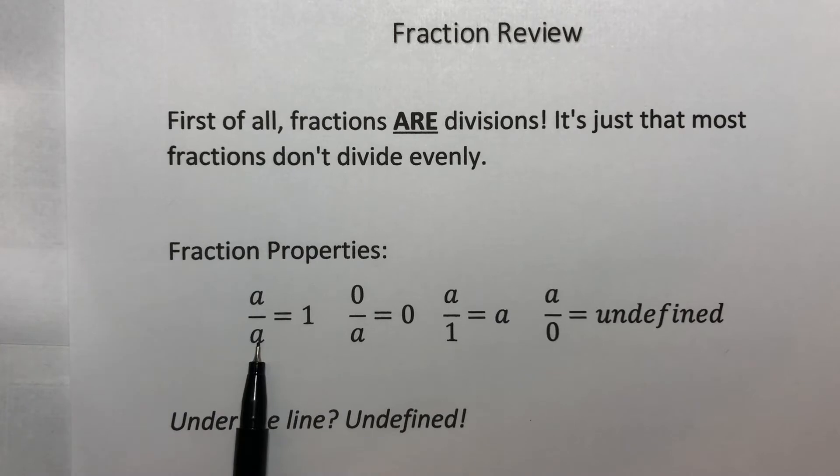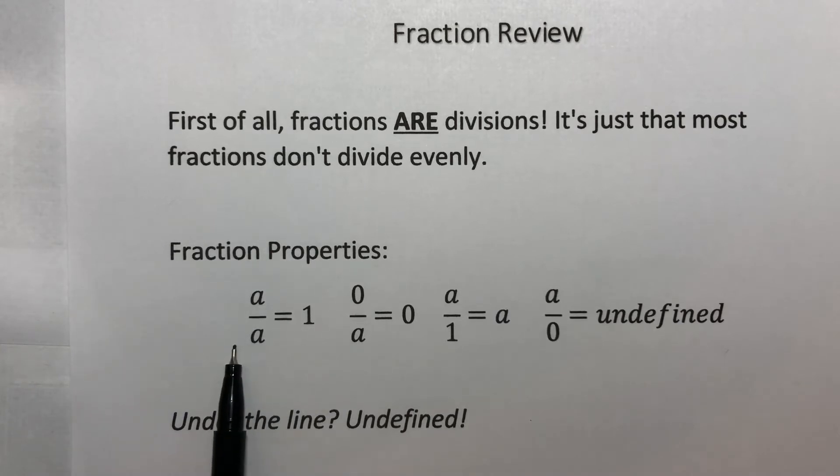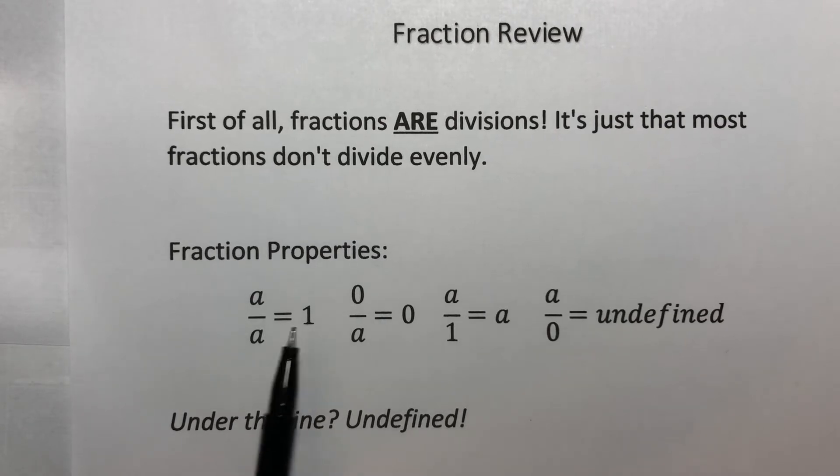This is A over A, which means A divided by A. If you think about it, any number, no matter what it is, divided by itself is one, always. So it doesn't really matter what these numbers are. If you have A over A, it's one, period.